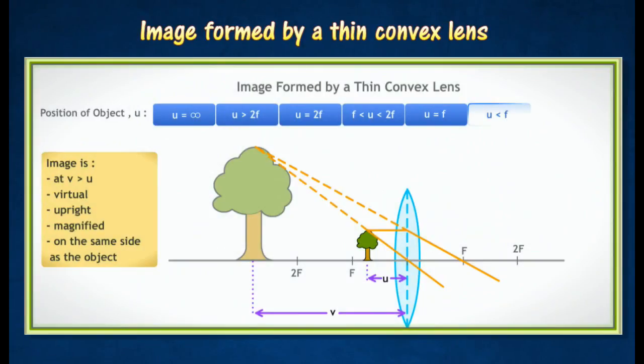When the object is placed between F and the lens, the image will appear behind the lens and object. The image formed is virtual, upright, magnified, and on the same side as the object. It is used as a magnifying glass and eyepiece of a compound microscope.